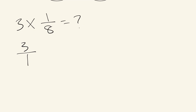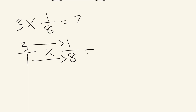If you want to put a whole number into a fraction, you always put the whole number on top and over one. Then you do times one eighth and multiply across, which gives you three over eight. Keep in mind that when multiplying by whole numbers, the denominator of the fraction is always going to be the product's denominator.